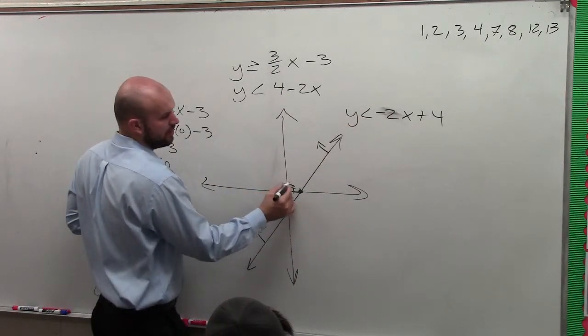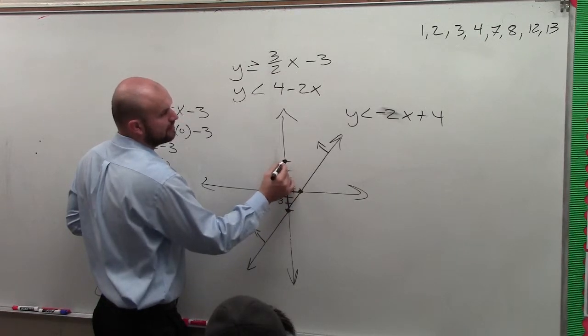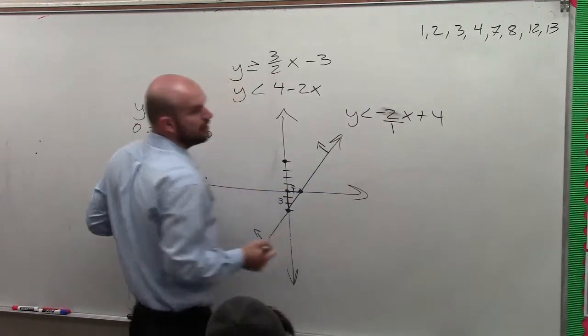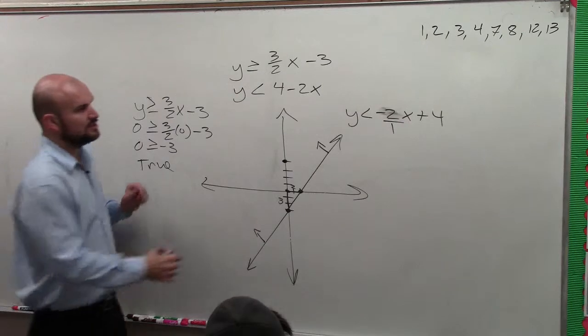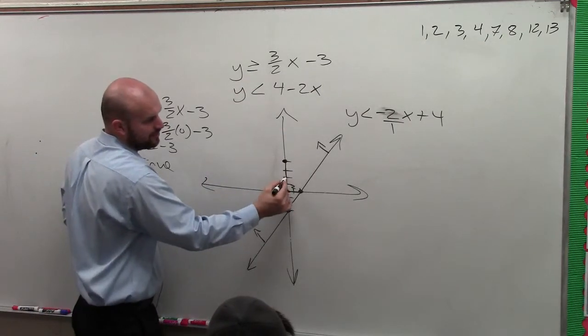I go up to my y-intercept positive 4, 1, 2, 3, 4. Now my slope I rewrite as a fraction, so it's negative 2 over 1. So I go down 2 over 1.